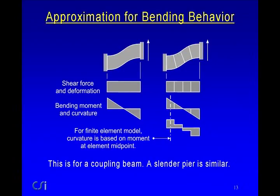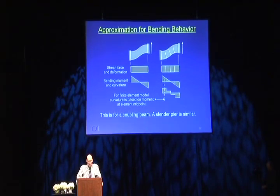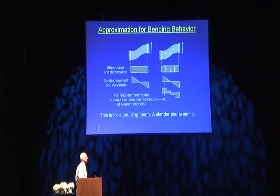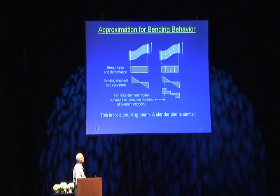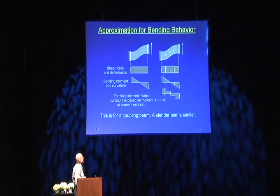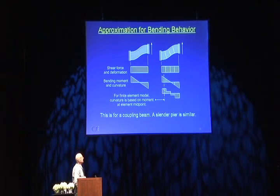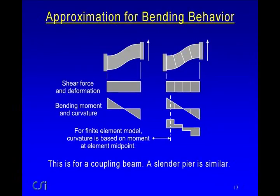Looking at what it means to use wall elements to model bending behavior — still elastic. I'm showing a horizontal beam; it could also be turned 90 degrees to be a pier. The exact elastic solution has constant shear force and shear deformation, with linearly varying bending moment and curvature. The finite element model also has constant shear force and deformation, but for bending: the moment still varies linearly, but because these are constant-curvature elements, the curvature is constant over the width of each element, based on the curvature at the element center.